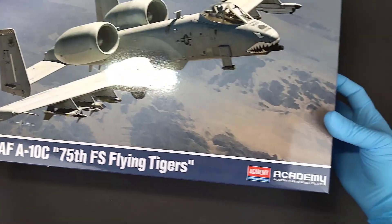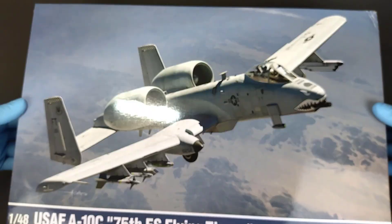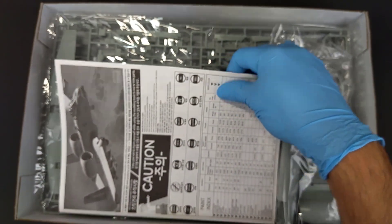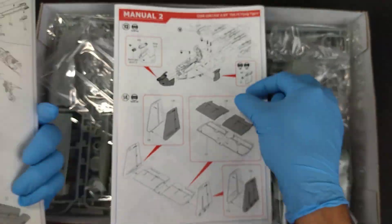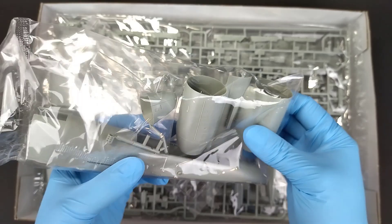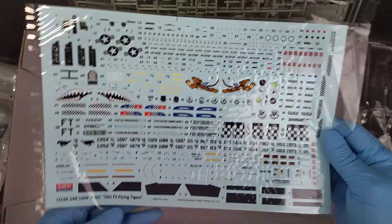This Academy kit looks very promising on the box. Inside there is a very strange instruction manual divided in two parts, a lot of plastic elements. There is also a decal sheet and masks for canopy and wheels.